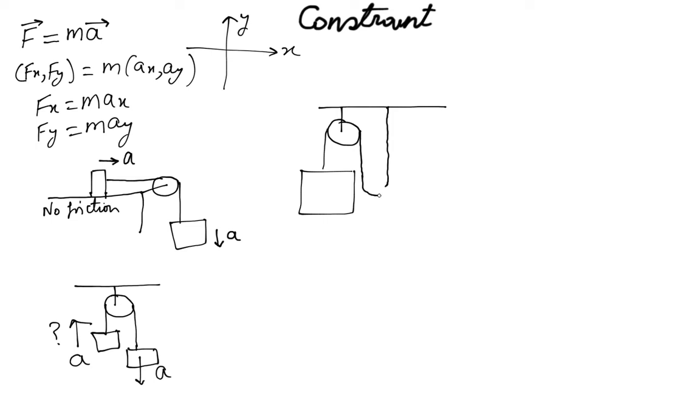And there's a pulley here, and there's a mass here. Now the question can be: if this guy is moving down by a, what is going to be the acceleration of the other guy up? Now you have to think about that—it will not be a.